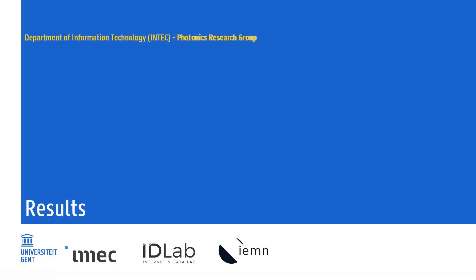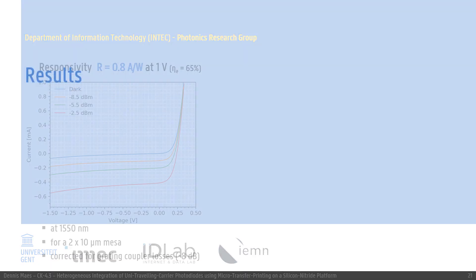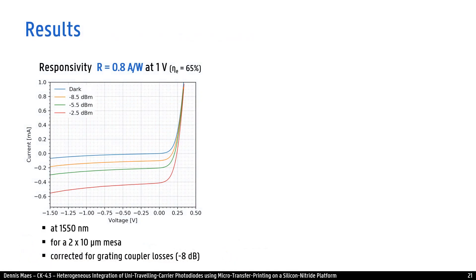This brings me to the third part of the presentation, the results. These transfer printed UTC photodiodes show a high responsivity of 0.8 Ampere per Watt at 1V biasing. This corresponds to an external quantum efficiency of 65% if corrected for grating coupler losses. You have to take into account this is only for a 20 square micrometer active region.